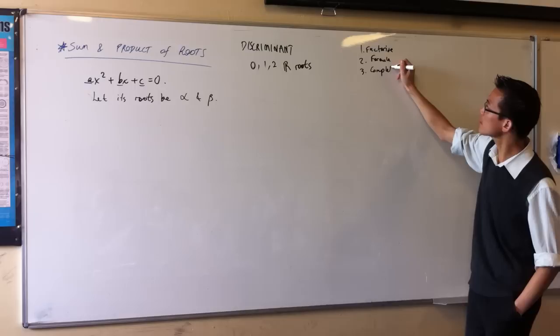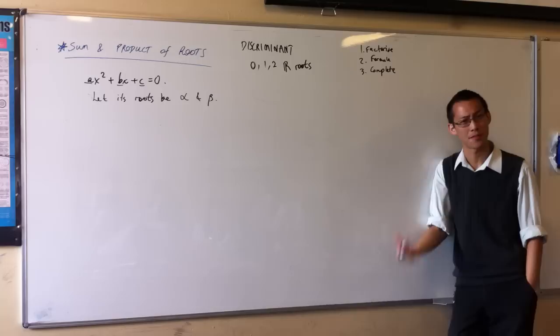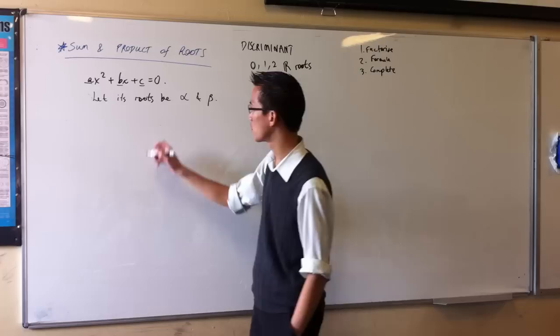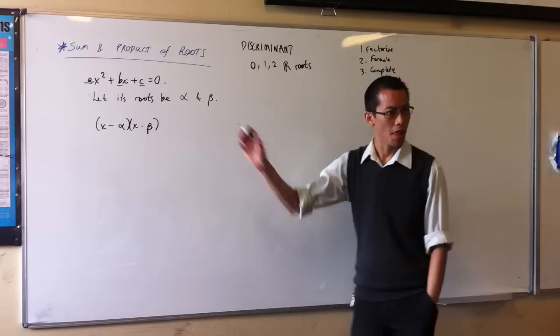Now, when you think about this first one here, factorization, we prefer this one because it's the fastest, right, and it's the most obvious. So if I were to factorize something, and it had roots alpha and beta, what would its factorization be? X minus alpha times X minus beta. Good. X minus alpha, X minus beta.